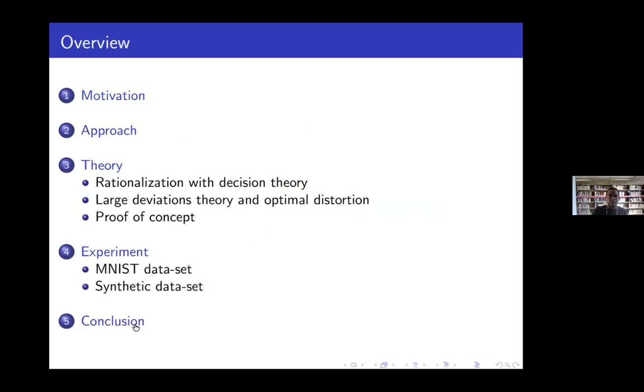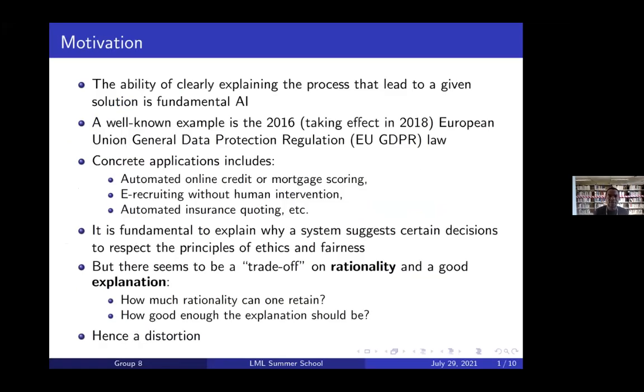The motivation of this project is that explainable AI is now a hot topic. The ability to explain clearly the process that has led to a given solution in AI has become more fundamental than before. One well-known example is the EU GDPR, which was worked around 2016 and came into effect in 2018, which stipulates that for any automated process there should be a clear explanation of the steps taken.